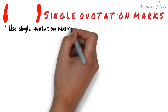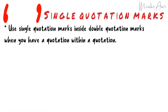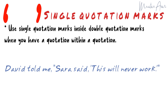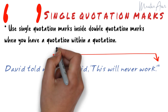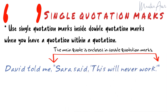Use single quotation marks inside double quotation marks when you have a quotation within a quotation. For example: David told me, "Sarah said 'this will never work.'" In this example, we have a primary quote said by David and a second quote said by Sarah. We enclose the main quote in double quotation marks and the second quote in single quotation marks.